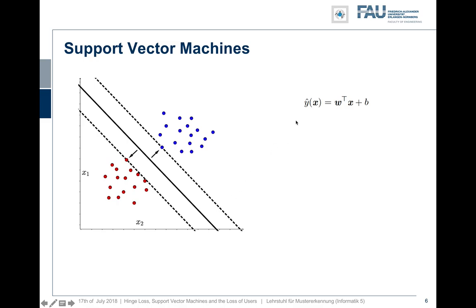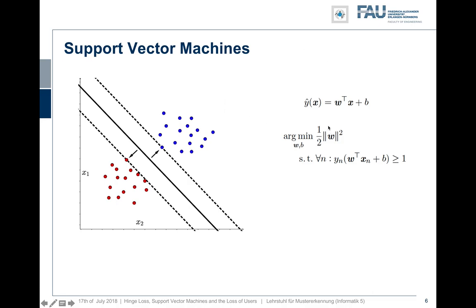Formally, we can describe this decision hyperplane as a simple linear equation shown on the right-hand side. We compute the signed distance to the respective hyperplane by taking the inner product of the normal vector with a vector x and adding the bias b. Given that we classify one class with a negative sign and the other with a positive sign, denoted as y_n, we can find constraints ensuring that points are correctly classified.